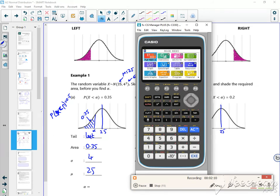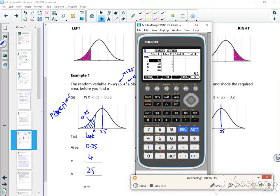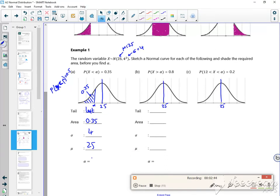The area is 0.35, sigma is 4, and mu is 25. Is there a draw option on this? No, we just get the value, which is 23.4587, so 23.46 is my alpha value.